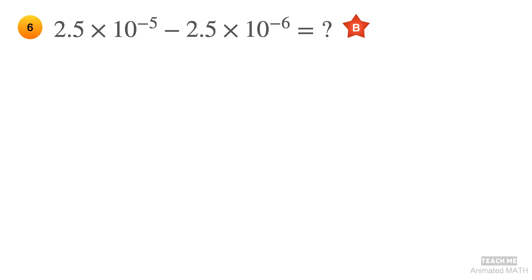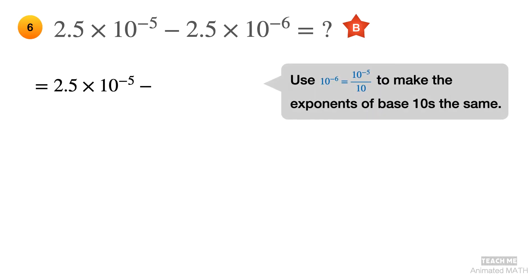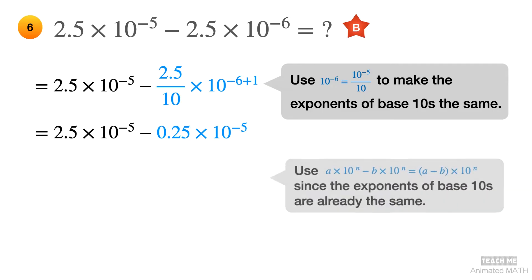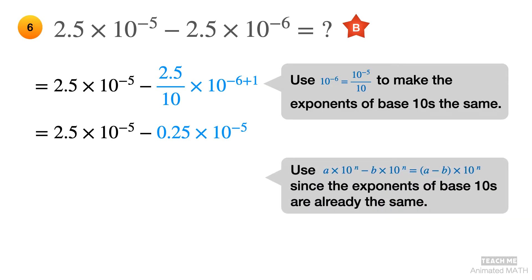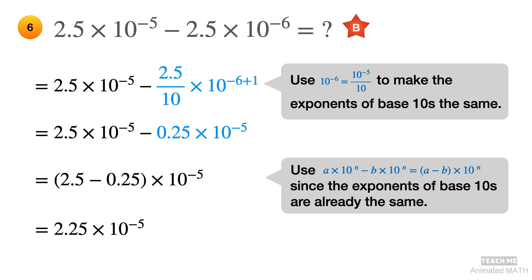This problem is similar to the last example, except that you have to do subtraction. The smaller number is the one with a multiplier of 10 to the negative 6th power. To transform the exponent to negative 5, you have to add 1 to its exponent and divide 2.5 by 10. Now you can solve 2.5 minus 0.25 because they have the same power of 10. The final answer is 2.25 times 10 to the negative 5th power.